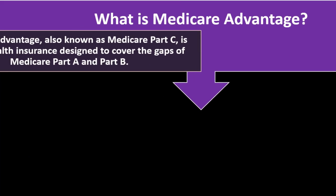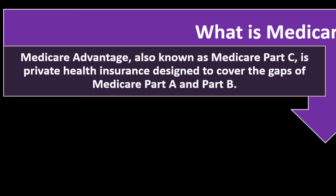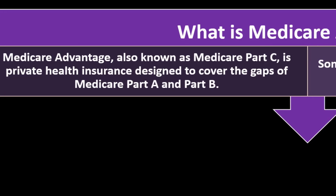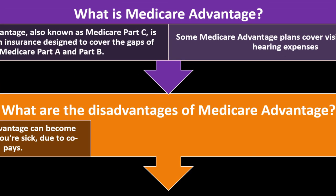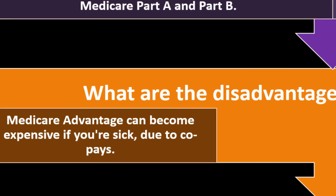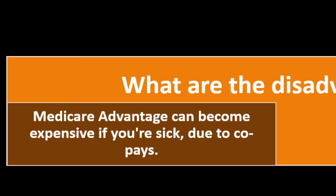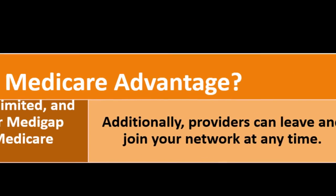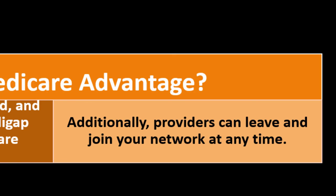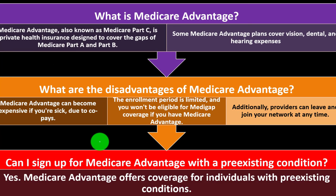What is Medicare Advantage? Medicare Advantage, also known as Medicare Part C, is private health insurance designed to cover the gaps of Medicare Part A and Part B. Some Medicare Advantage plans also cover vision, dental, and hearing expenses. What are the disadvantages of Medicare Advantage? It can become expensive if you're sick due to co-payments, the enrollment period is limited, and you won't be eligible for Medigap coverage if you have Medicare Advantage. Additionally, providers can leave and join their network at any time. Can I sign up for Medicare Advantage with a pre-existing condition? Yes — Medicare Advantage offers coverage for individuals with pre-existing conditions.